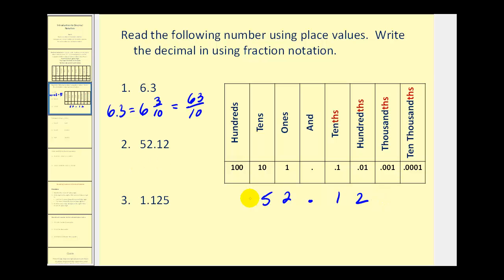For number two, we would have 52 and 12 hundredths. And if we convert this to an improper fraction, 100 times 52, that would be 5,200 plus 12. So we have 5,212 over 100. Now this does simplify, but we're going to leave it in this form because it does show the place value. And this is often called a decimal fraction.